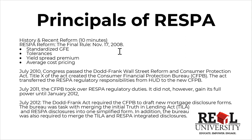In 2008, they standardized the GFE. They standardized tolerance on the numbers that make up the final total. They standardized the yield spread premium — what they pay the mortgage brokers. And then they standardized average cost pricing.